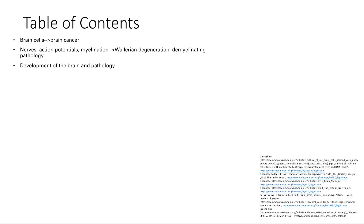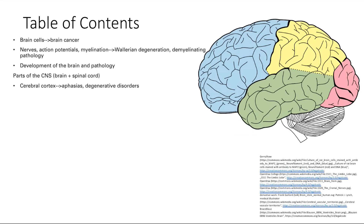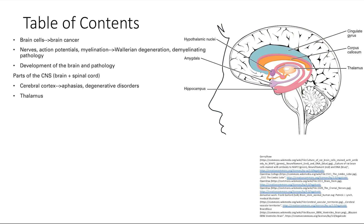We're going to zoom out now from the little cells and look at the central nervous system, which includes the brain and the spinal cord. The very outer layer is the cerebral cortex — this is basically all the higher-level functions of your brain, including your personality, decision-making, and speech. After that, we're going to delve deeper into the deep parts of the brain. There's the thalamus, then the hypothalamus, and then the limbic system as a whole, which is all the colored structures we see depicted in the brain.